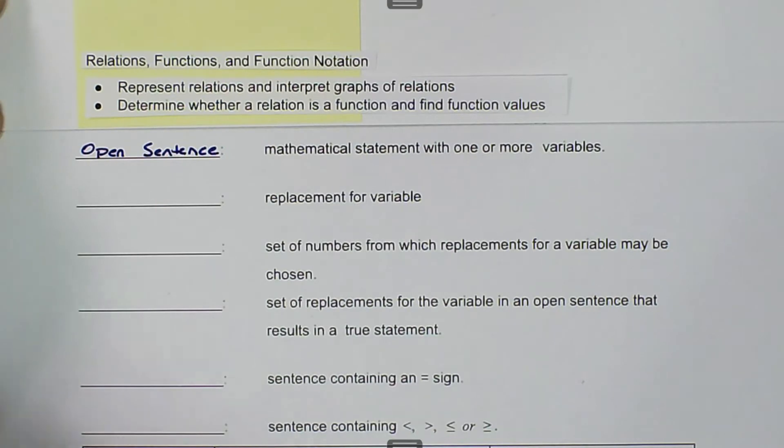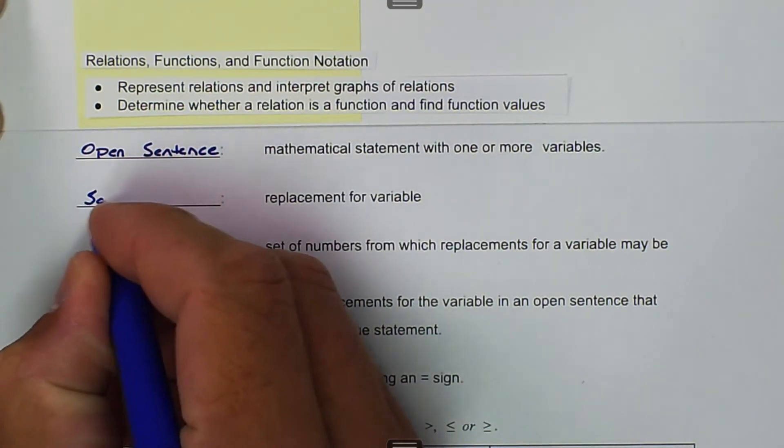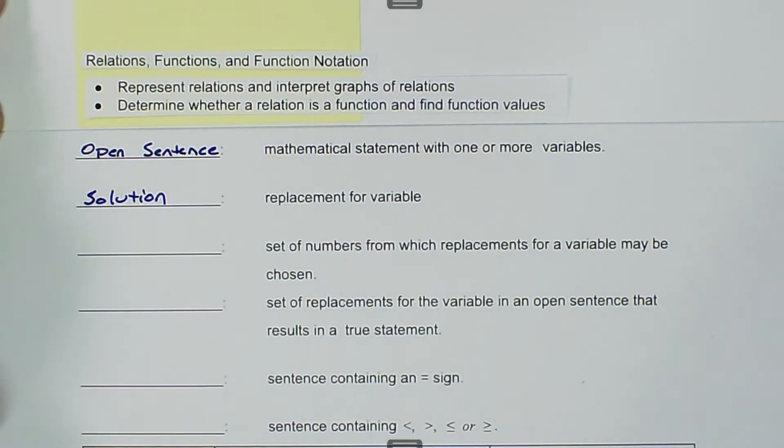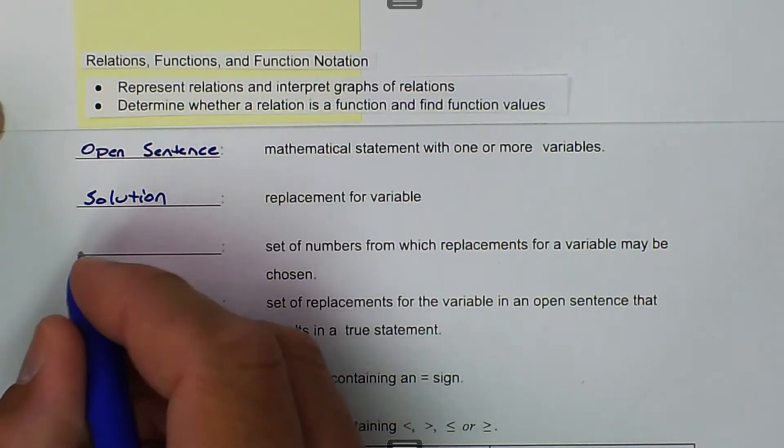Replacement for a variable - another word for that would be solution. A set of numbers from which replacements for a variable may be chosen is a replacement set.